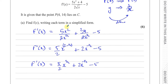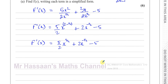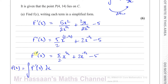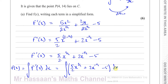We haven't started integrating yet — we've just prepared it by writing terms separately, with all x terms in the numerator. Any x in the denominator comes to the top with a negative power. Now we are ready to integrate. The integral of f dash of x with respect to x gives us f of x. So we integrate 5 over 2 times x to the power of 3 over 2, plus 2x to the power of negative a half, minus 5, with respect to x.